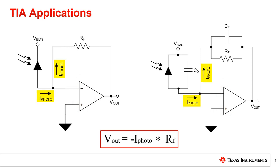Therefore, all the current goes through the feedback resistor, essentially converting the input current to an output voltage by again, using Ohm's law. Output voltage is equal to the photodiode current multiplied by the feedback resistor.